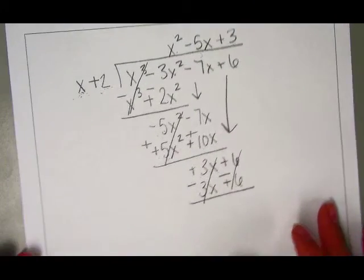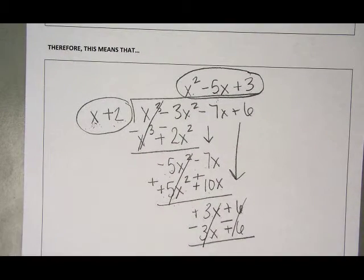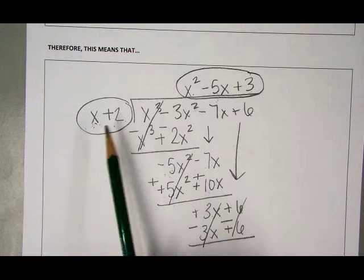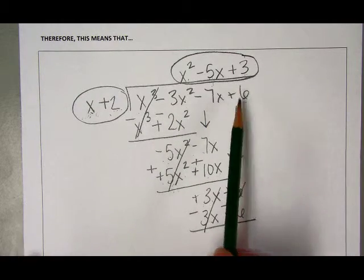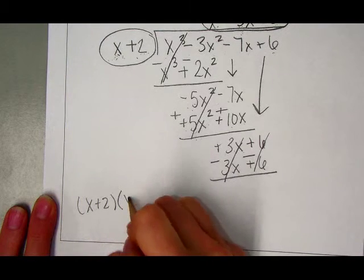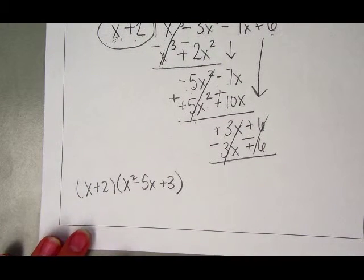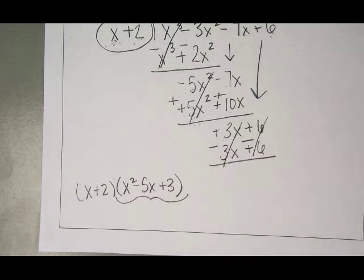At this point I've factored my cubic into two smaller groups. So x cubed minus 3x squared minus 7x plus 6 is the same as x plus 2 times x squared minus 5x plus 3. I can see if I can break this down further. Sometimes these factor relatively easily, but in this case I can't find two numbers that multiply to give me 3 and add to give me negative 5, so I have to use the quadratic formula.